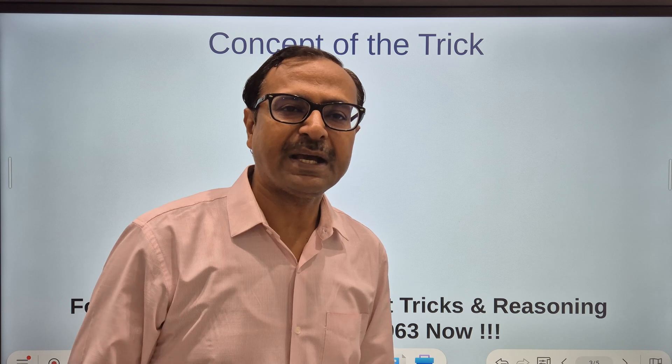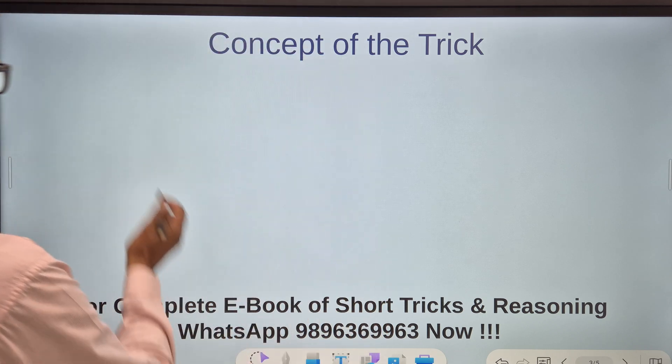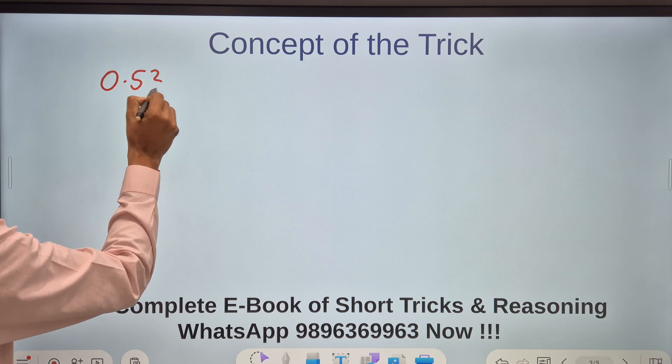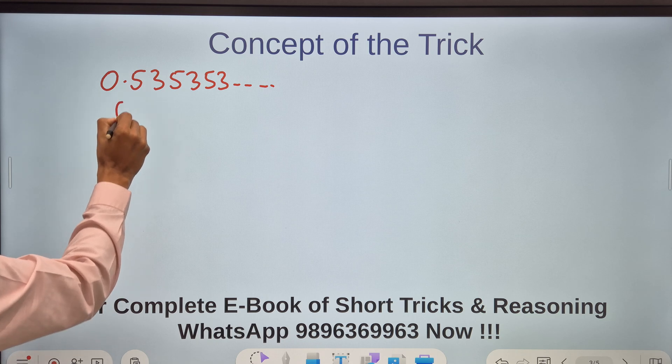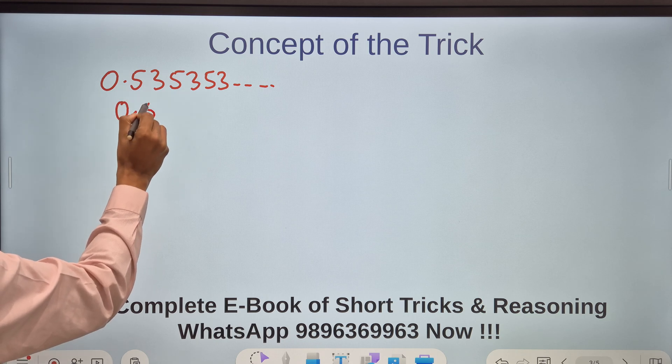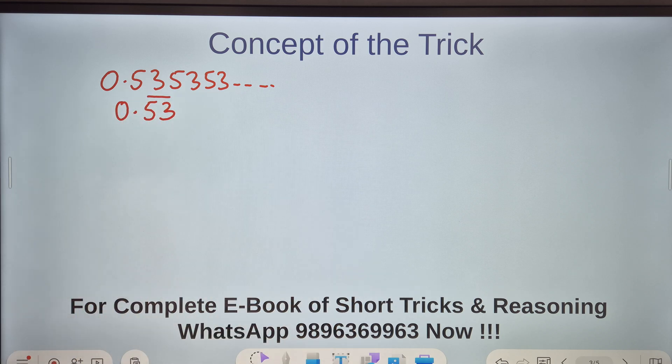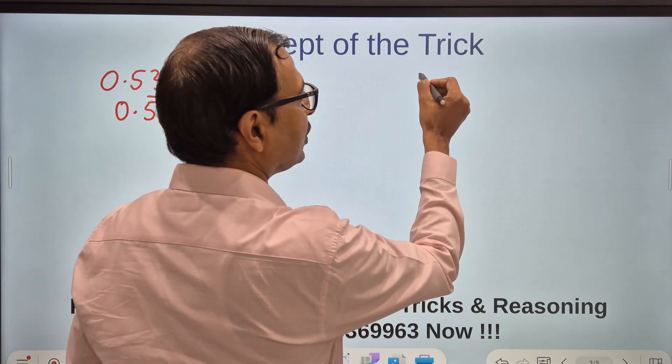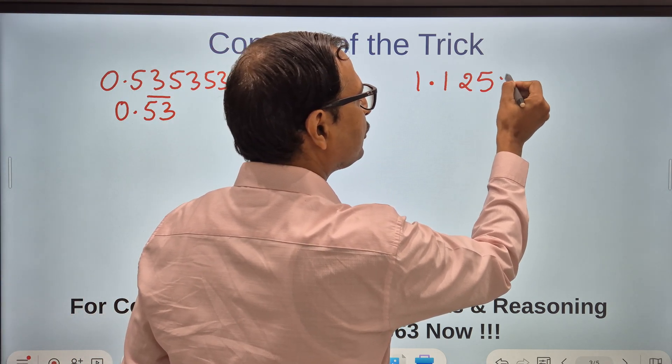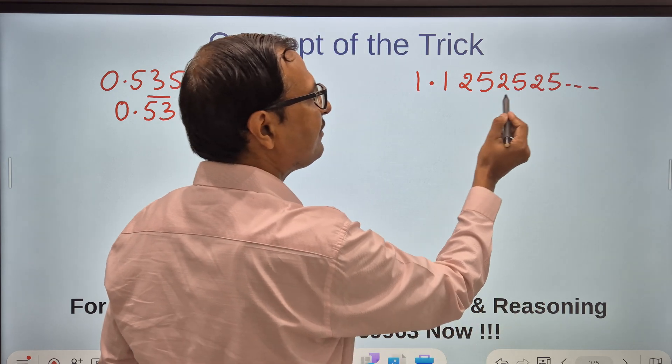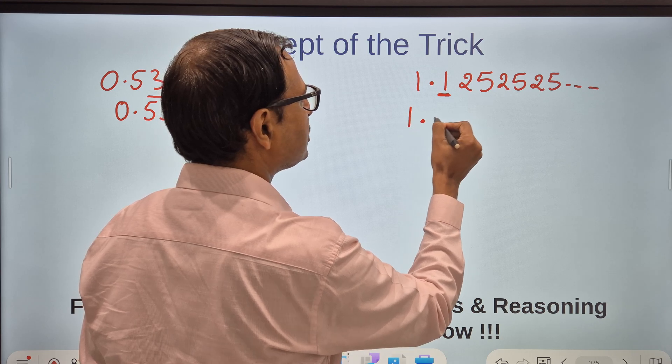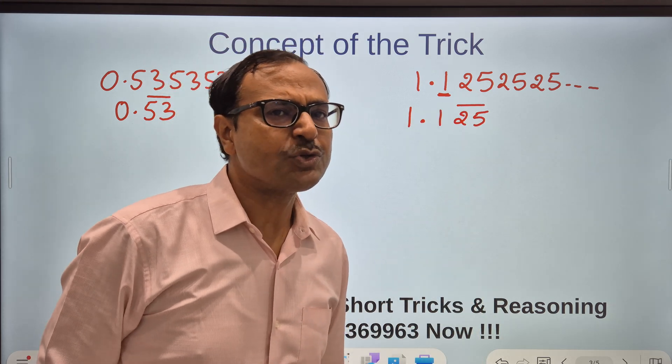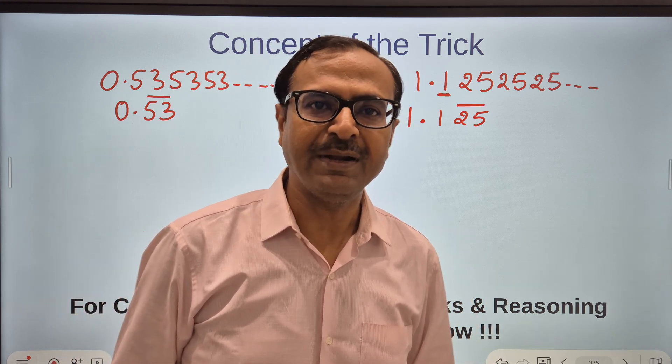For the concept, let me take up two different examples. The first one is 0.535353 and so on. What is so special about this question? Here 0 point and after decimal the 53 is repeating. There is nothing after decimal which is not repeating. I am going to take one more question where there is something after decimal which is not repeating: 1.1252525 and so on. 25 is repeating but this one after decimal is not repeating. So this becomes 1.1 bar 25 bar. What is the concept and what is the traditional method the students are doing at school level? Let's do that first.